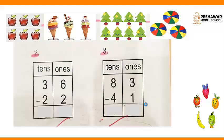Jab tens aur ones akhatha aata hai, toh hum sab se pehle ones ko minus karte hai, subtract karte hai. Okay, look at the apples. We have 6 apples. We minus 2 from it. So we get 4. 6 minus 2, we have 4, is equal to 4.